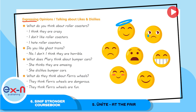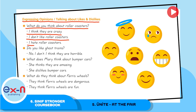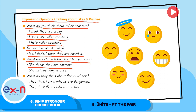Number 9. Expressing opinions — talking about likes and dislikes. What do you think about rollercoasters? I think they are crazy. I don't like rollercoasters. I hate rollercoasters. Do you like ghost trains? No, I don't. I think they are horrible. What does Mary think about bumper cars? She thinks they are amazing. She dislikes bumper cars.